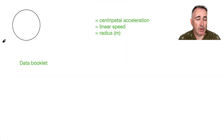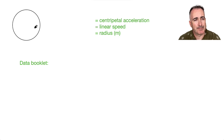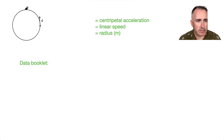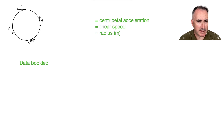Let's consider an object going around in a circle. If I look at the linear speed, I draw a little vector here — these vectors have the same length at different positions. The idea is that the linear speed remains the same as it goes around.